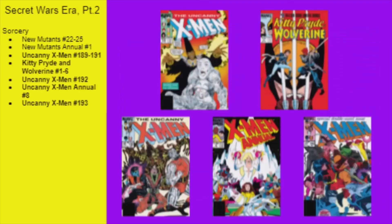The X-Men then get a bunch of minis. After dealing with Kulan Gath in issues 189 through 191, we can read about Kitty Pryde's and Wolverine's adventures in their mini before they return in 192, which ends with Xavier getting beat half to death. However, since Storm leaves the team in 193, X-Men Annual number 8 — which has Wolverine, Kitty, Xavier, and Storm — has to take place during 192 and should be read after, since Wolverine and Kitty are more important than Xavier.